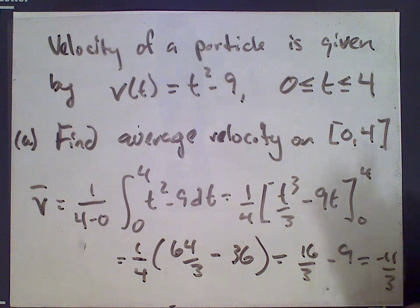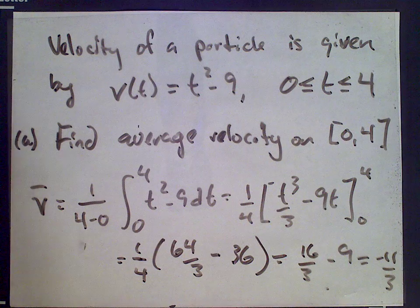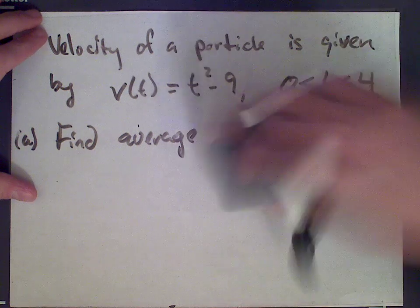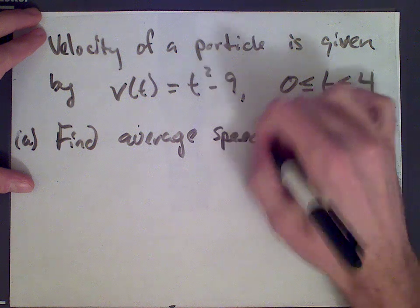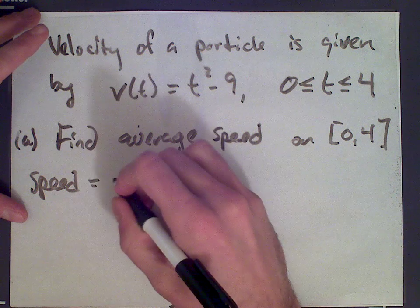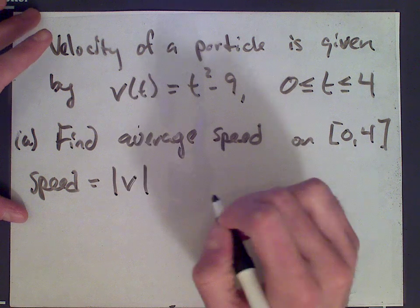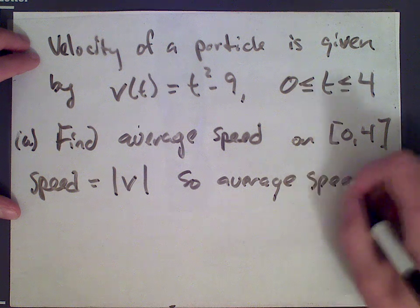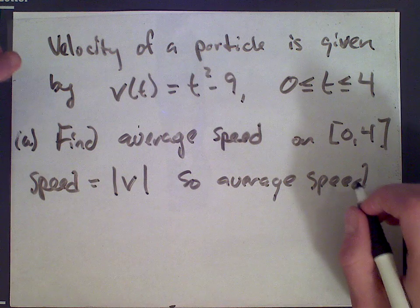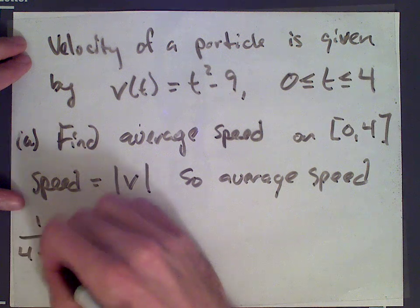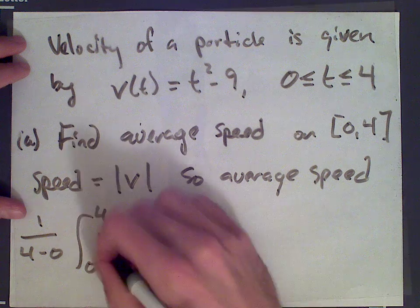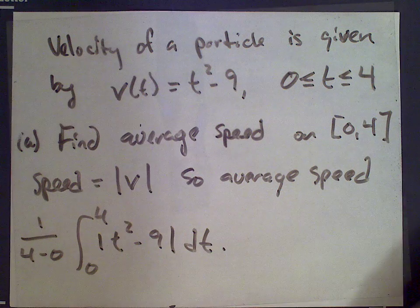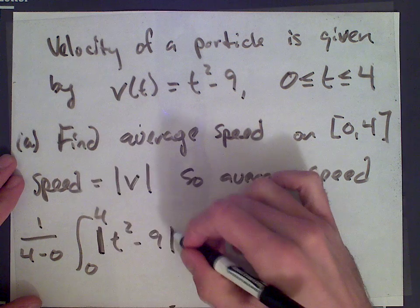Part C asks for the average speed. Velocity takes into account direction; speed doesn't consider direction. So speed is the absolute value of the velocity. The average speed is the average of the absolute value of the velocity — it's 1/(4-0) times the integral from 0 to 4 of |t² - 9| dt. To evaluate this, we need to split up the interval into where t² - 9 is positive and where it's negative.